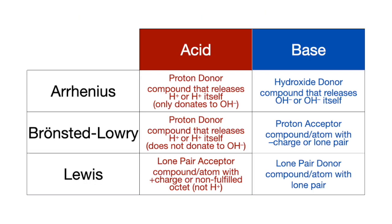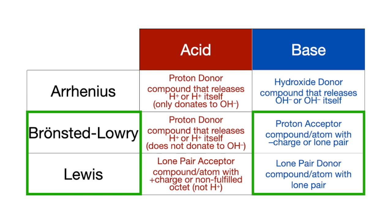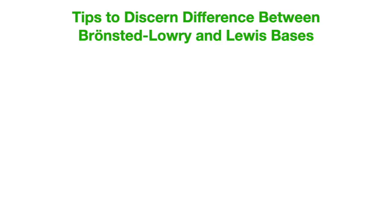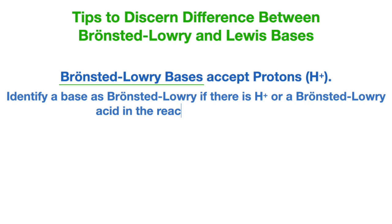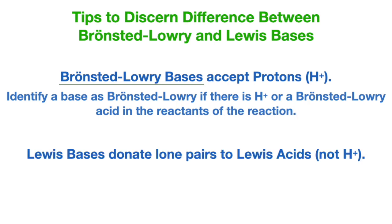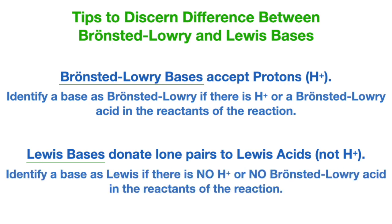It's also important to know the difference between Bronsted-Lowry and Lewis bases — one's a proton acceptor, one's a lone pair donor. A Bronsted-Lowry base accepts protons, which means there must be a proton donor or protons in the reaction, whereas a Lewis base donates lone pairs to Lewis acids, not protons, meaning there are no protons or proton donors in the reaction.